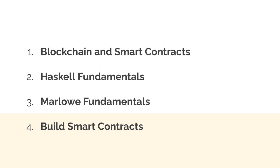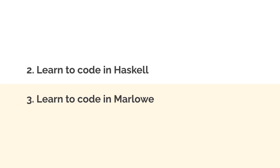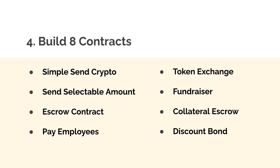First, we're going to learn about the blockchain and how smart contracts work. Then we're going to learn the fundamentals of coding in Haskell and Marlowe. Finally, we'll use Marlowe embedded in Haskell to code smart contracts for Cardano. We'll also do an introduction to blockchain, talk about what is Cardano and what is a smart contract.